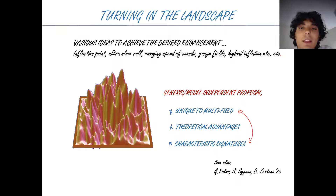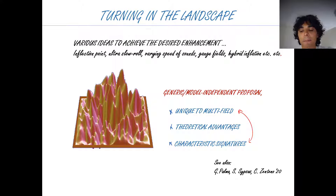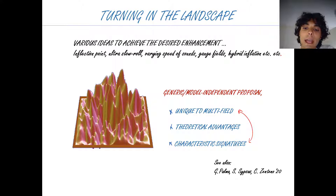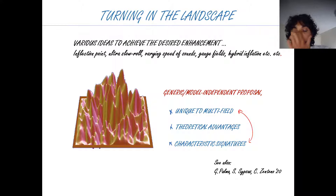There are various ideas and many scenarios where you can have this enhancement of curvature fluctuation — inflection point, ultra-slow-roll — some of them driven by the Hubble flow. What we are proposing here is a mechanism which acts only in a multi-field context, so it is unique to multi-field inflation and has some theoretical advantages. I want to stress it can have potentially characteristic signatures that will act as a smoking gun for multi-field dynamics that otherwise cannot be probed.